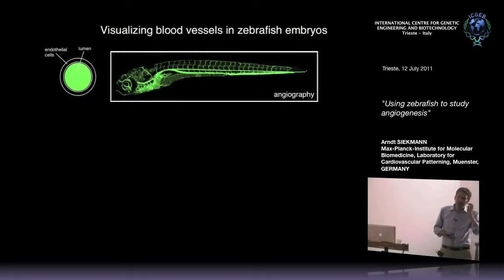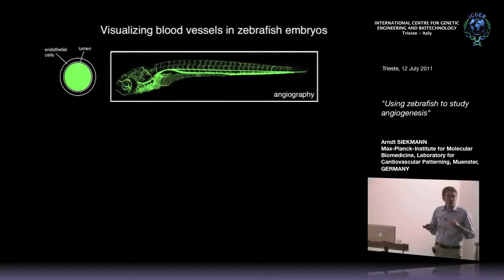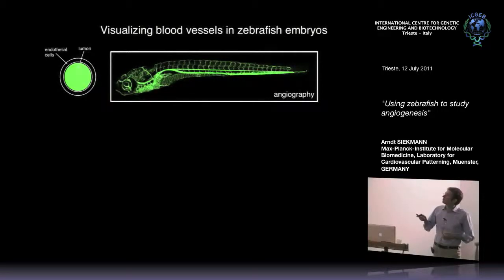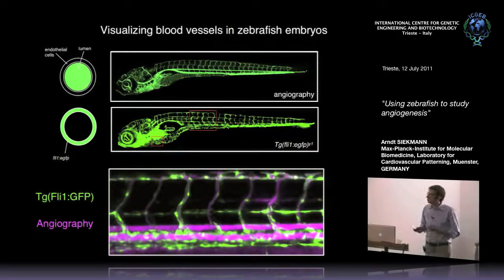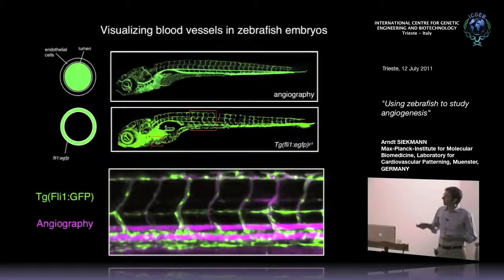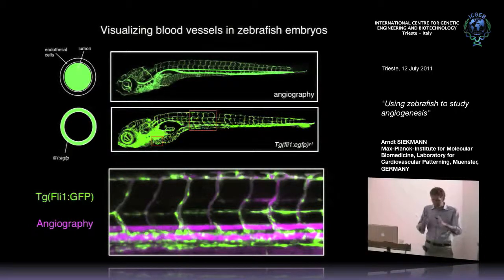For visualizing blood vessels, we have several technologies. You can do angiography by injecting fluorescent dyes directly into the circulation so all vessel lumens light up. You can see the fish with the head and the beautiful intersomitic vessels. We also have transgenic fish expressing GFP in all endothelial cells, and you can combine both technologies - different colors labeling the lumen and the cytoplasm of endothelial cells respectively.